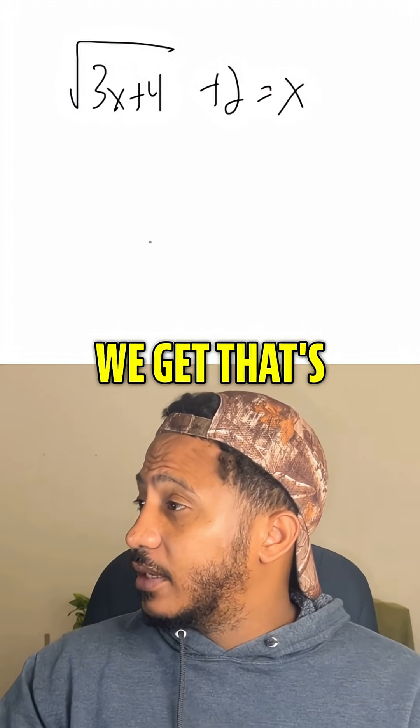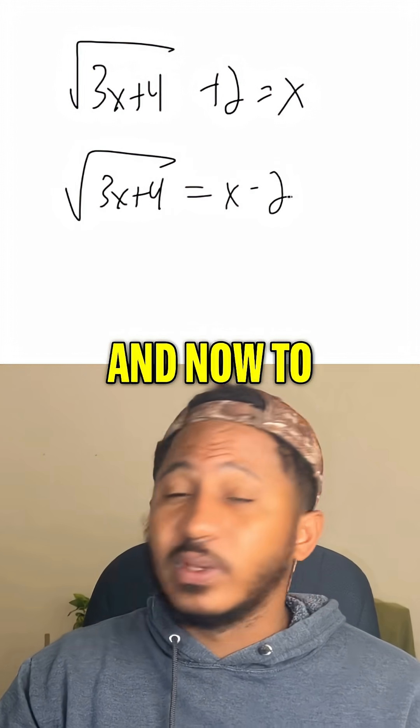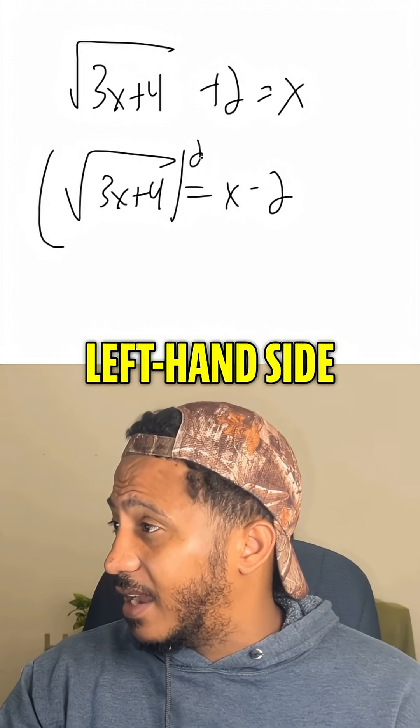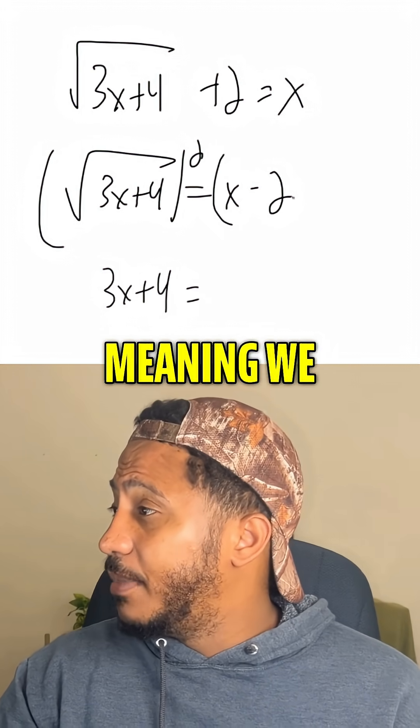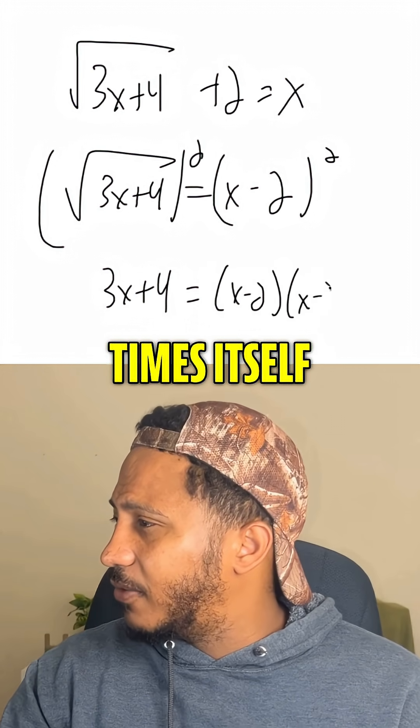So here's subtracting 2, we get the square root of 3x plus 4 equals x minus 2. And now to get rid of that radical, raise both sides to some power. If we square this left-hand side, we get just 3x plus 4. So we're squaring the right-hand side, meaning we have to multiply this out, foil it out, right? So that's x minus 2 times itself.